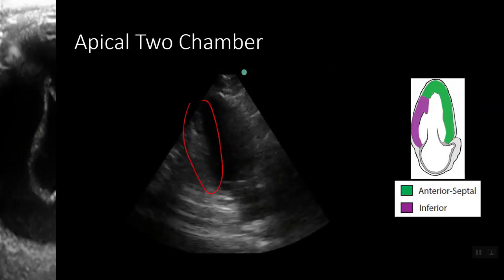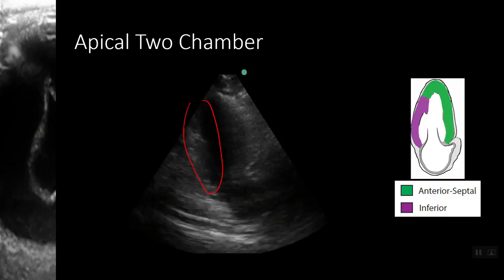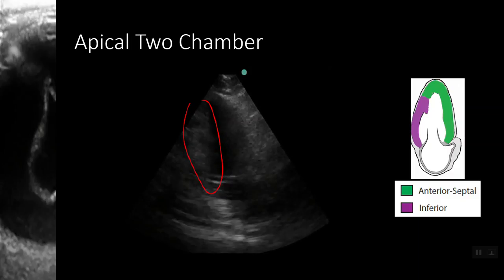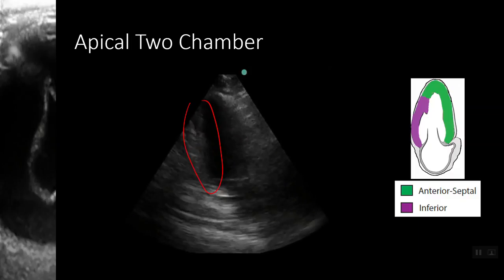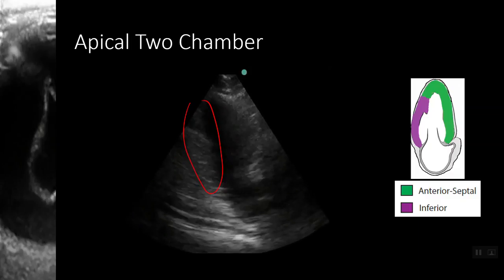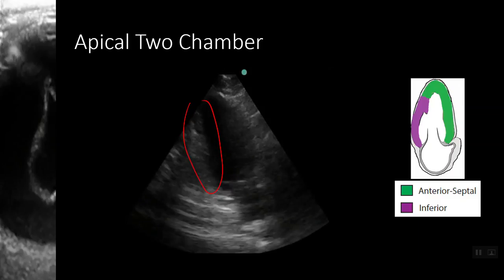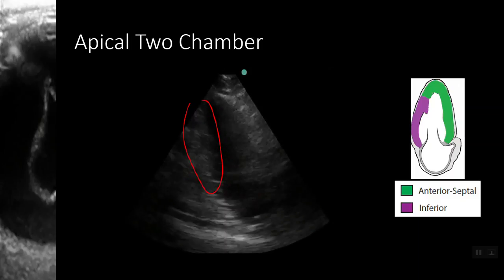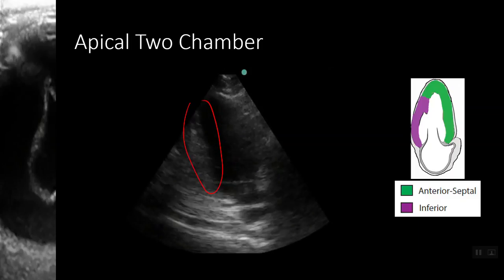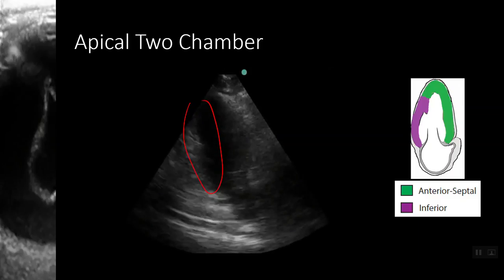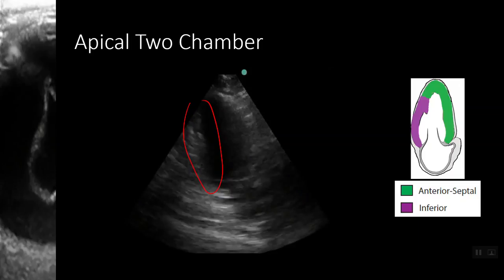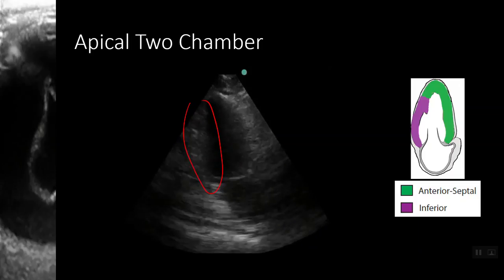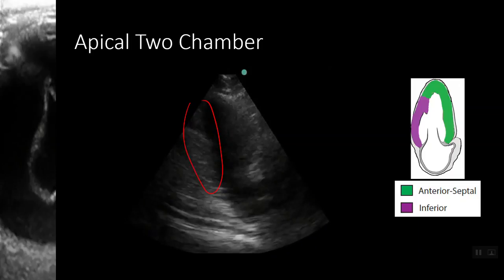To technically obtain the apical two chamber view, you start from your apical four chamber and rotate the probe counterclockwise so that it is pointing approximately towards the right shoulder. It is a tough view to obtain in the beginning, but practice makes perfect — get into the habit of trying it on stable patients during your cardiac exams.